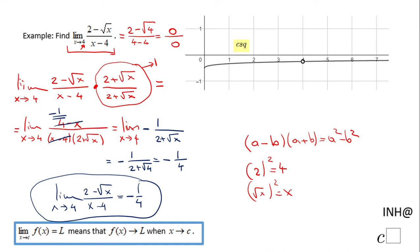You can notice that also in the graph. You see here, once you get close to 4 from the left or the right side, the function is getting closer to a value here, which is -1/4.